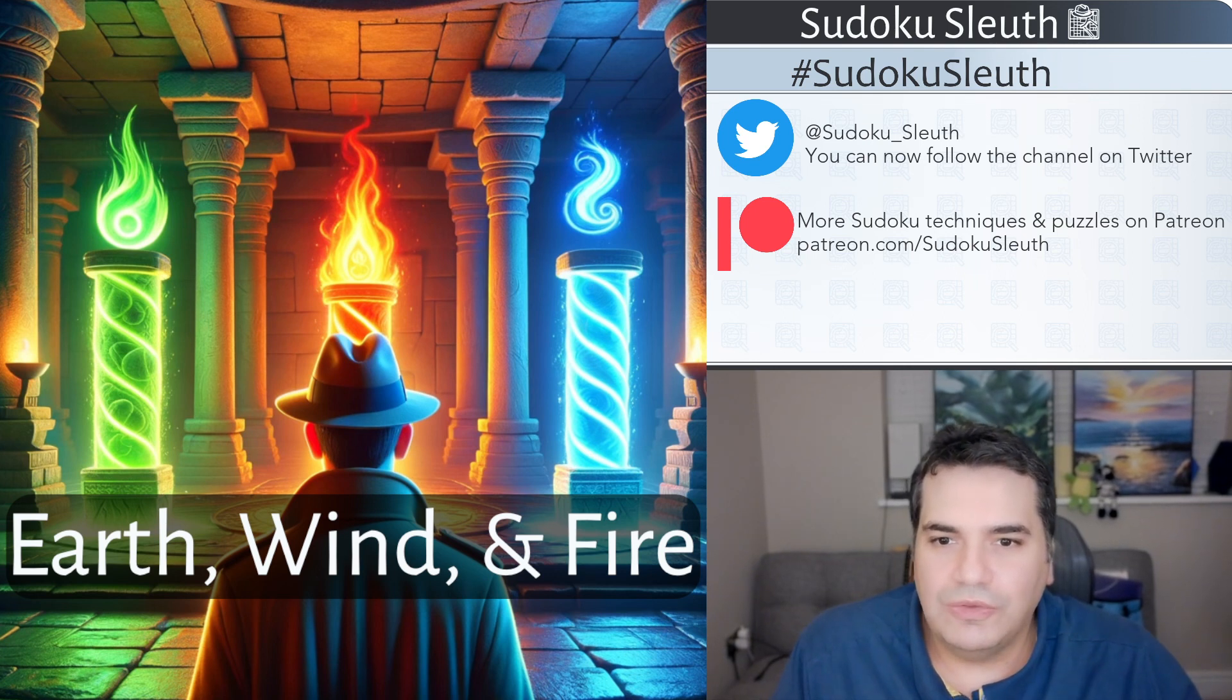Here is what I've attempted to do. Sleuth is just stepping into some ancient stone temple. There are clearly three pillars representing these three elements. We've got green earth, red fire, and blue wind. That's my attempt here of trying to represent these three elements.